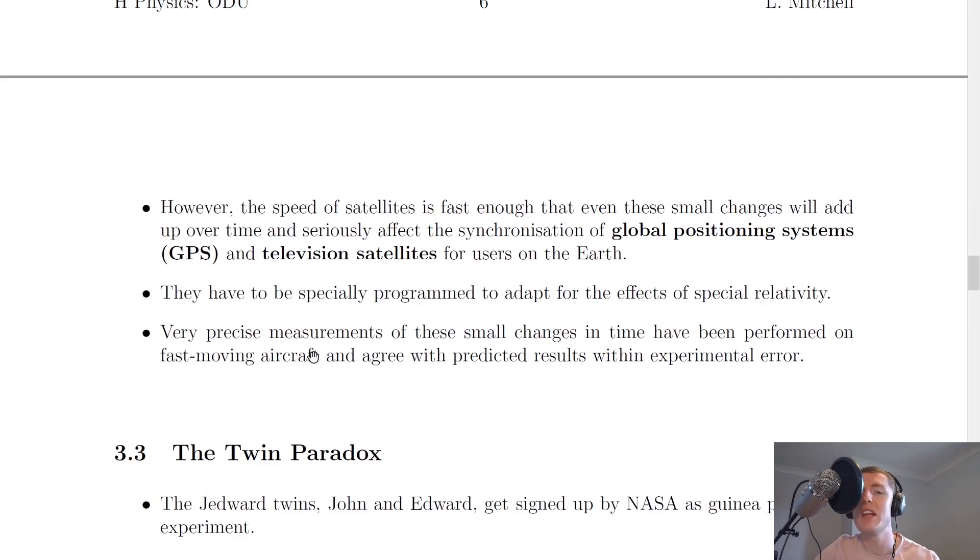Lastly, it says that very precise measurements of these small changes in time have been performed on fast-moving aircraft and agree with predicted results within experimental error. So these effects of time dilation with satellites, although small, can add up and cause significant changes. So we do need to correct for those when we're using satellites.